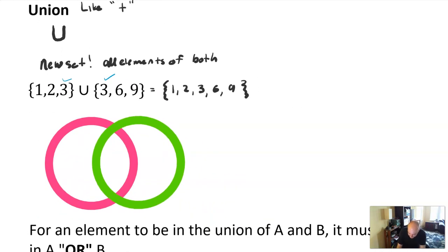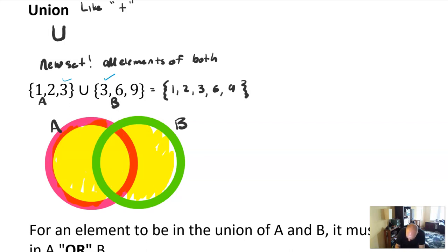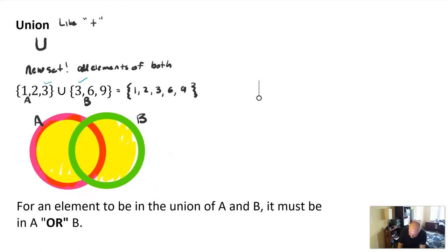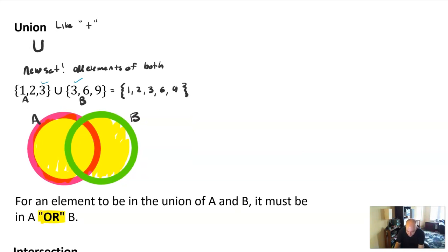One way to think about this is with a Venn diagram. If {1, 2, 3} is set A and {3, 6, 9} is set B, and you draw this out — here's set A, here's set B — the union is everything contained in both sets, like shading the entire diagram. In math, we say for an element to be in the union, it has to be in A or B. Union in math corresponds with the programming idea of or — it's a way to take two sets and kind of glue them together.